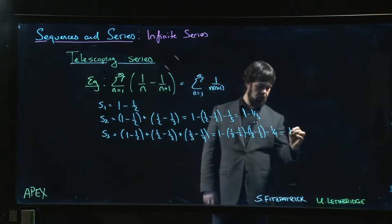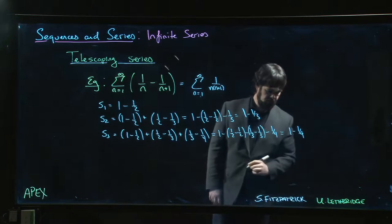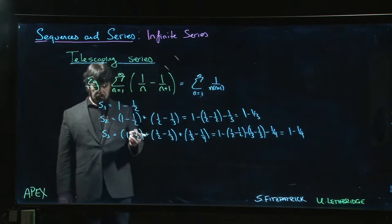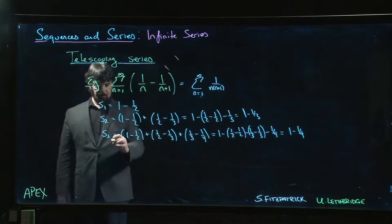So we get 1 minus 1 quarter. And you can probably guess what's going to happen for the next one. So in general, if we went down to Sn...